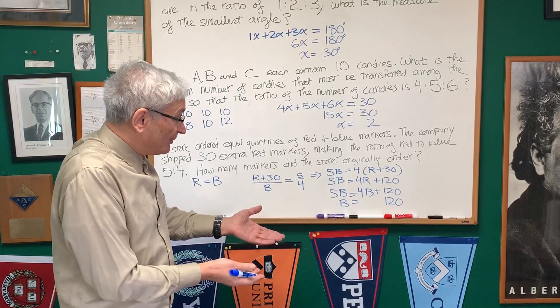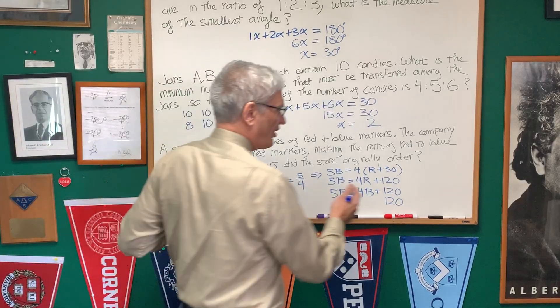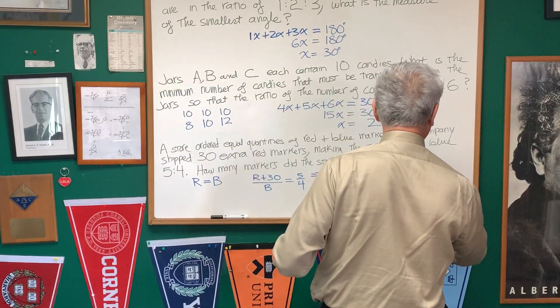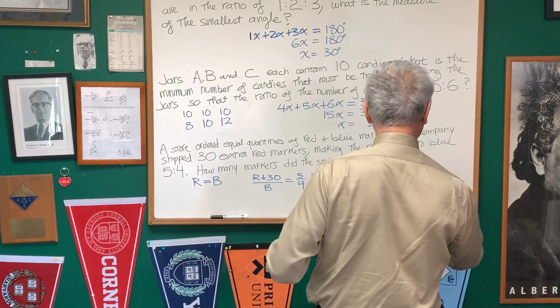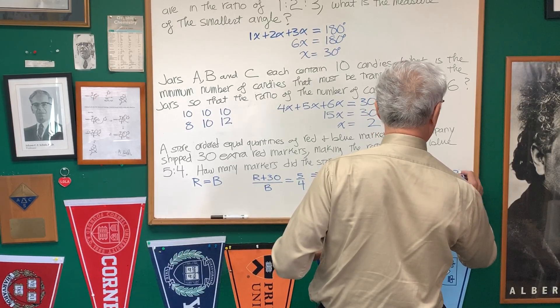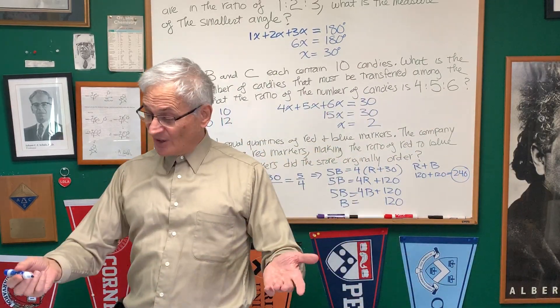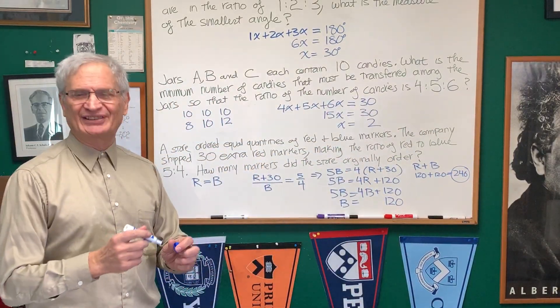All right. If B is equal to 120, how many markers did the store originally order? R and B. So, R plus B, R is 120, and B is 120. The total number of markers that were originally ordered was 240. And there we are, just a little variation on the same idea.